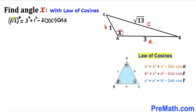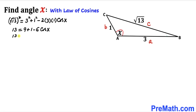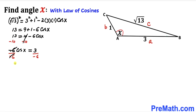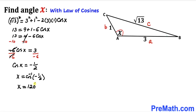Simplifying: the square and square root cancel, so 13 = 9 + 1 − 6·cos(x), which gives 13 = 10 − 6·cos(x). Subtracting 10 from both sides: −6·cos(x) = 3. Dividing both sides by −6: cos(x) = −1/2. In other words, x = cos⁻¹(−1/2), which equals 120°. So our angle x turns out to be 120°.